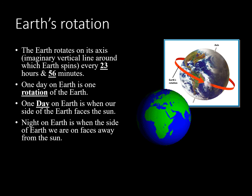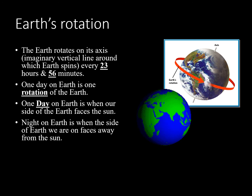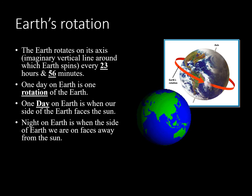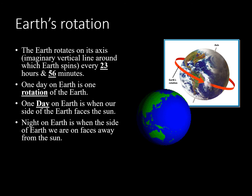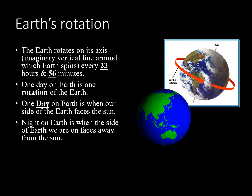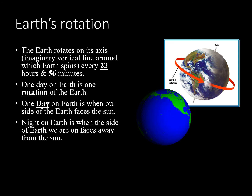Earth's rotation: the earth rotates on its axis, which is an imaginary vertical line around which the earth spins. Every 24 hours, the earth completes one rotation — that is one day. Daytime on earth is when our side of the earth faces the sun, and night is when the side we are on faces away from the sun.